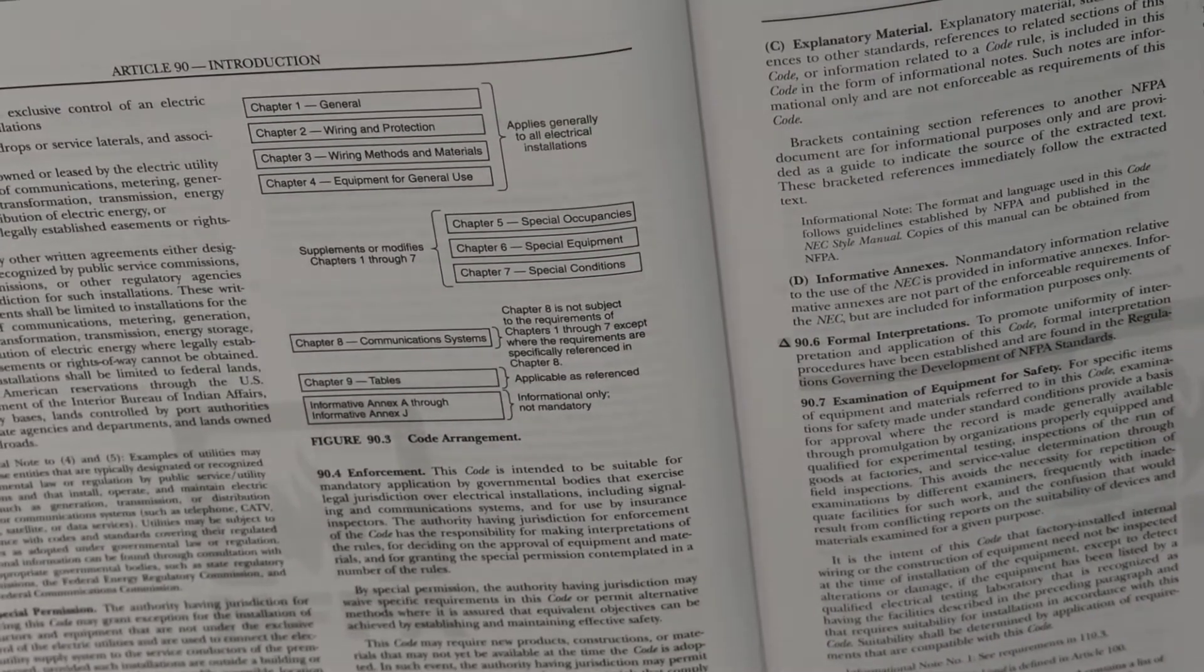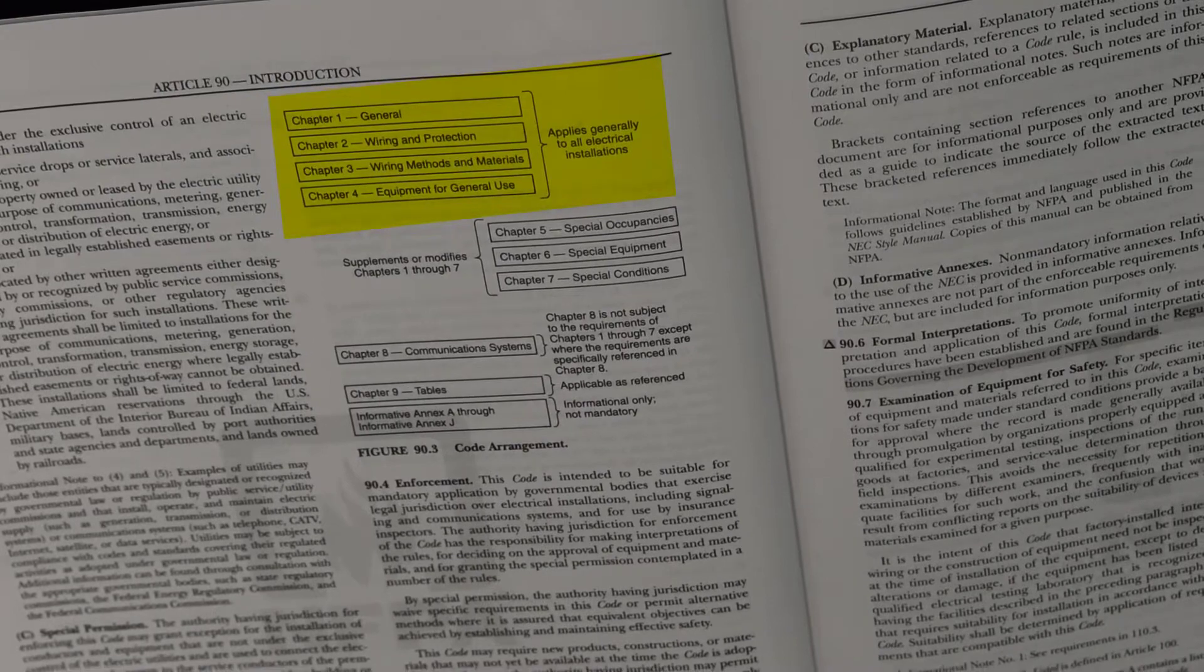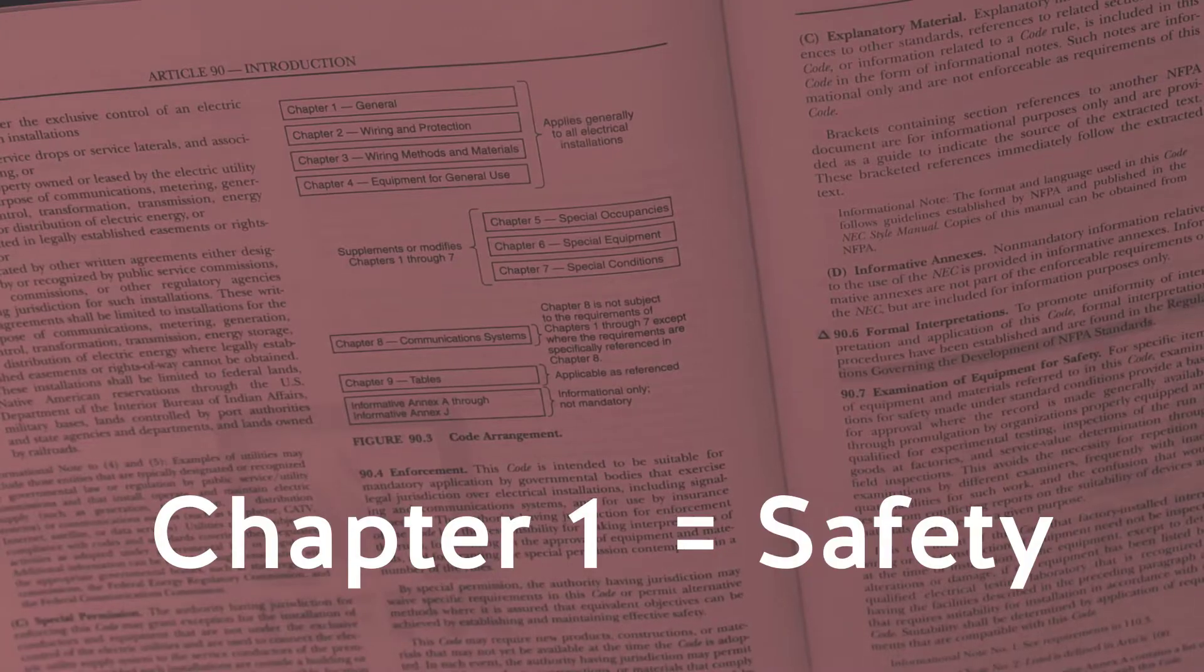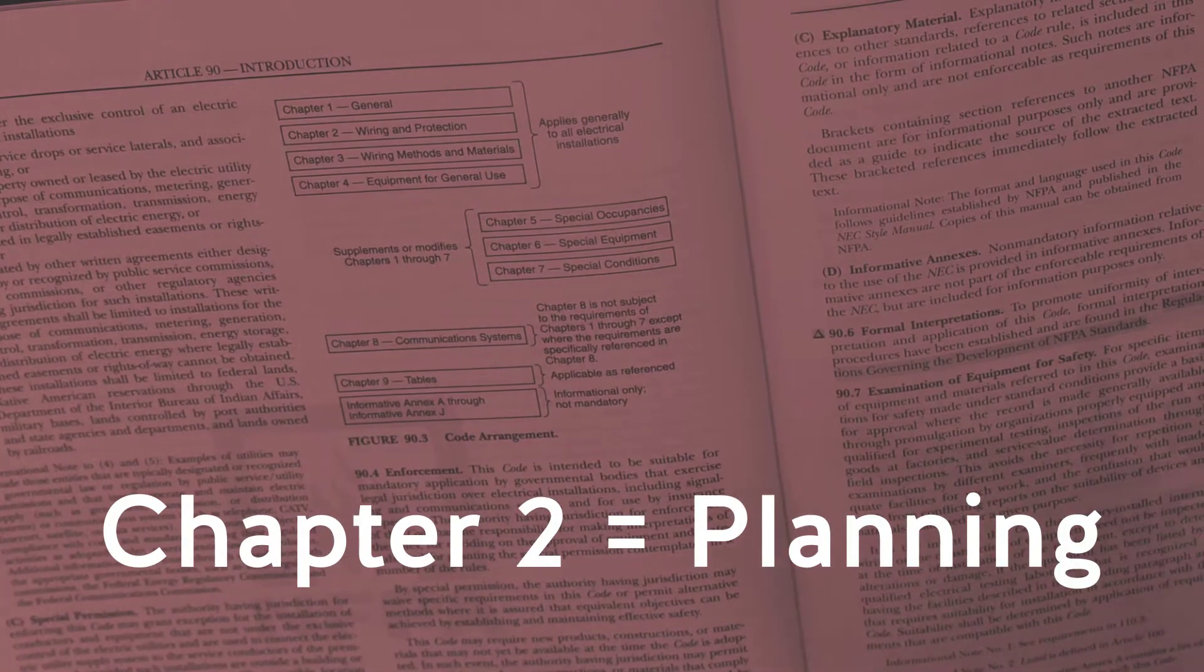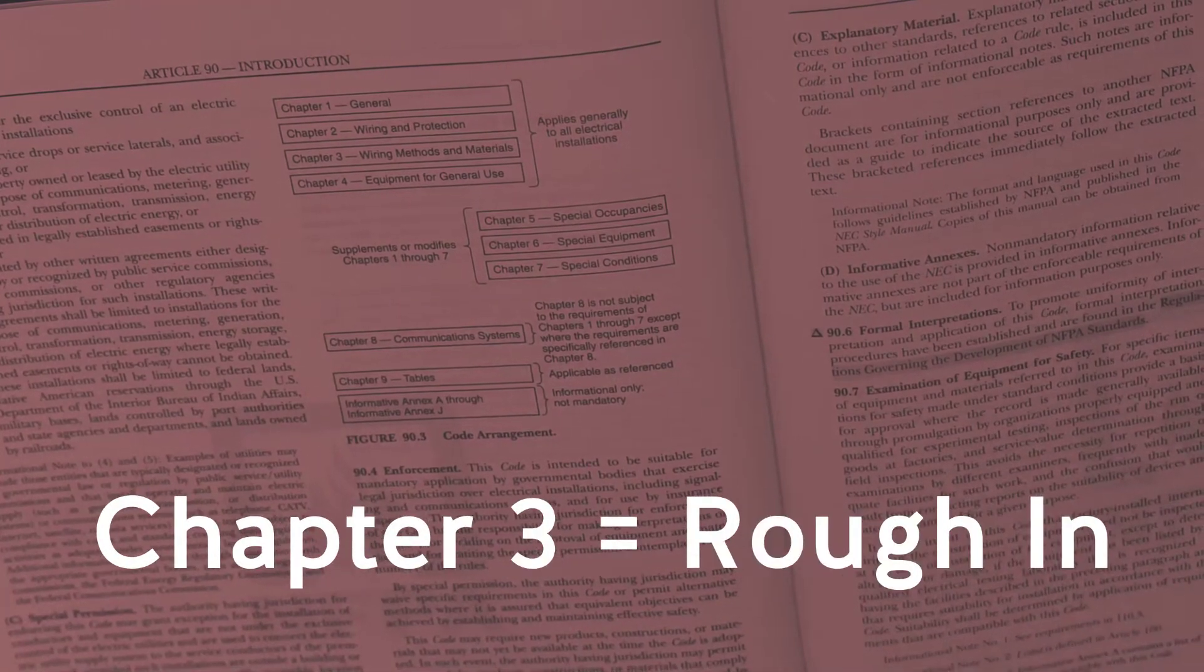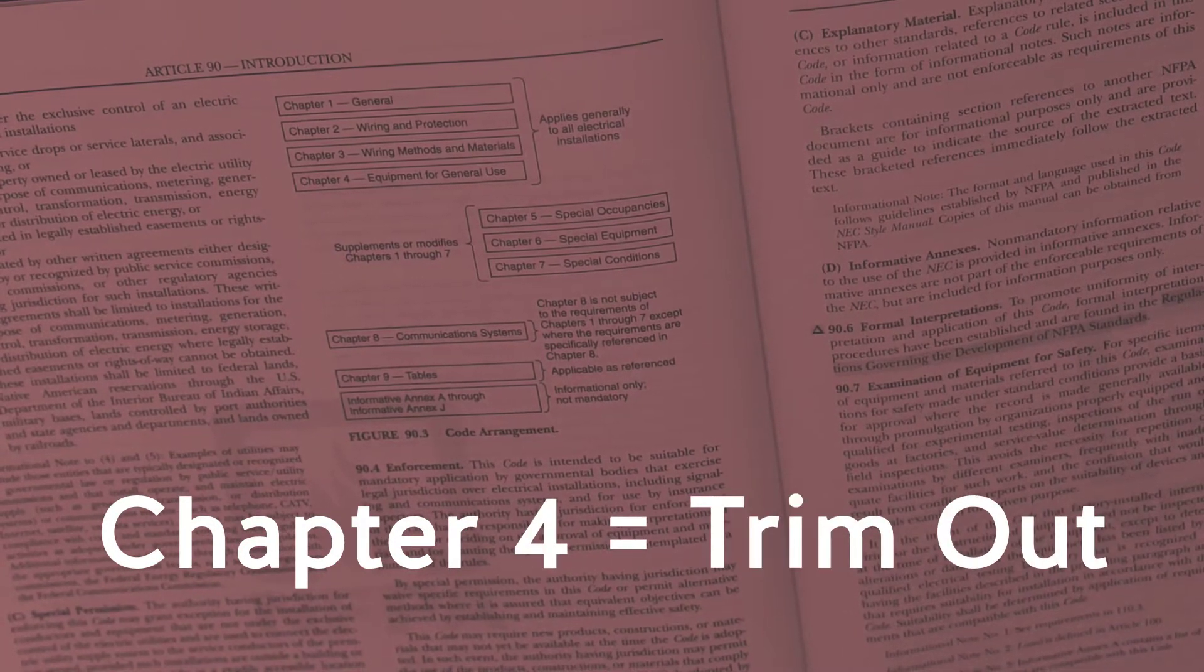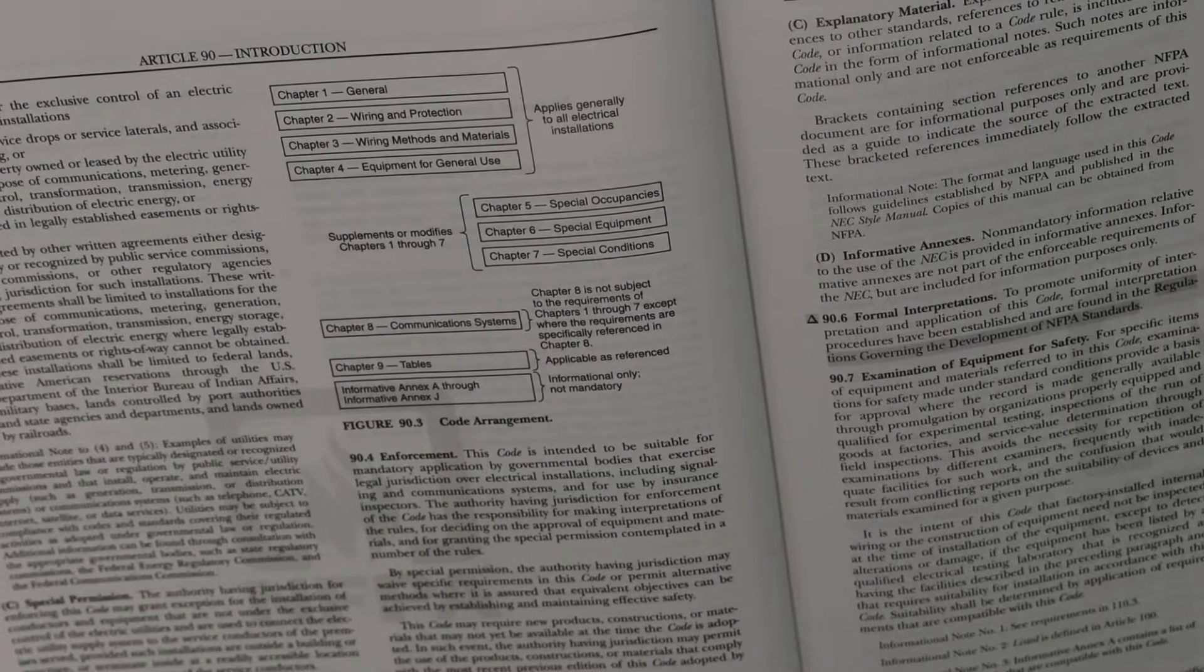In the first part of understanding this code book, we talked about the first four chapters and we related that to a job site atmosphere. Chapter one we described as safety, chapter two as planning, chapter three as rough end as you would do on a job site, and chapter four we described as a trim out, the final connections. Let's talk about the rest of these chapters.